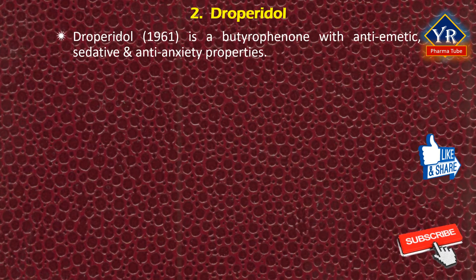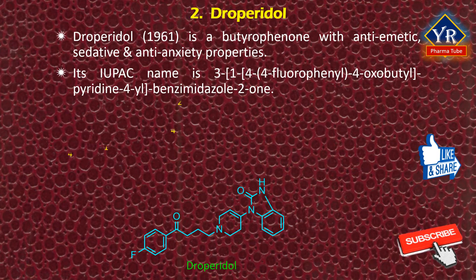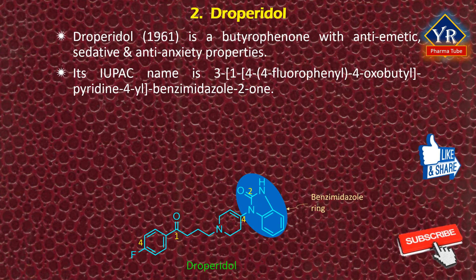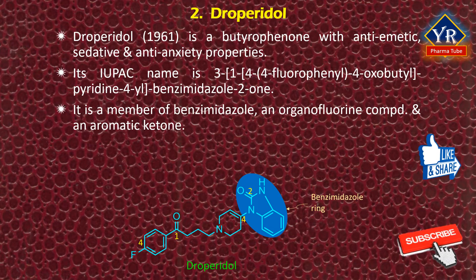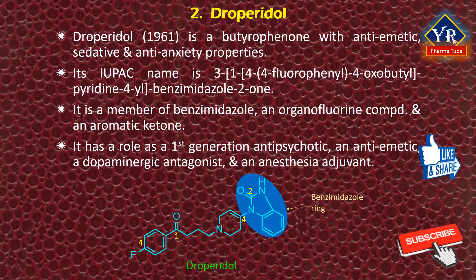The next drug is droperidol, which was discovered in 1961. It is a butyrophenone with antiemetic, sedative, and anti-anxiety properties. Its IUPAC name is 3-[1-(4-(4-fluorophenyl)-4-oxobutyl)-3,6-dihydropyridin-4-yl]-1H-benzimidazol-2(3H)-one. It is a haloperidol analogue in which the hydroxyl group has been eliminated with introduction of a double bond in the piperidine ring, and the 4-chlorophenyl group has been replaced by a benzimidazol-2-one-1-yl group. It is a member of benzimidazoles, an organofluorine compound, and an aromatic ketone with roles as a first-generation antipsychotic, antiemetic, dopaminergic antagonist, and anesthesia adjuvant.